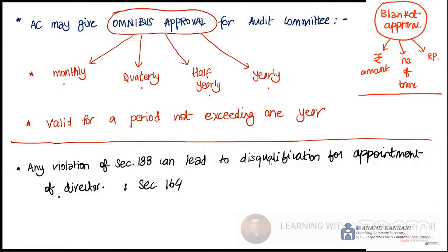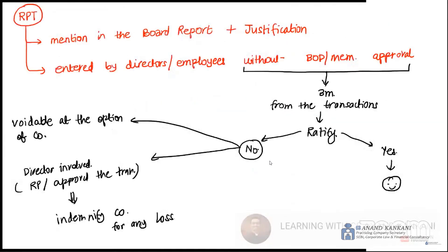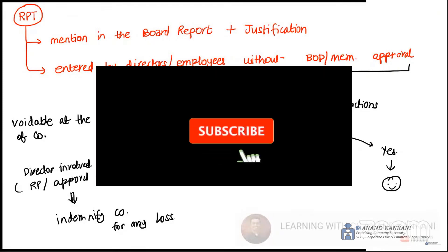If you violate the approval requirements, under Section 164 you will attract disqualifications. For BOD consent, Section 188 transaction limits apply. If you have entered into a related party transaction, you must mention it in your board report along with justification for why you transacted with a related party. If you enter into an RPT without members' or BOD approval when it was required, you have 3 months to ratify it. If ratified, there is no problem; if not ratified, the transaction becomes voidable at the option of the company, and the director involved will be required to indemnify.